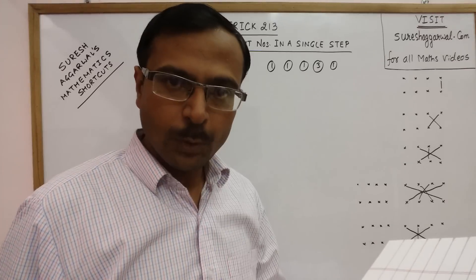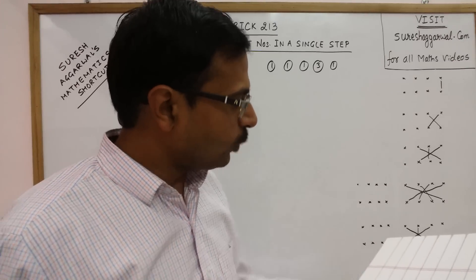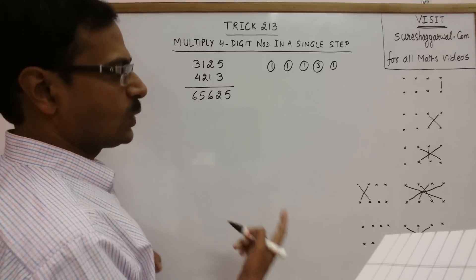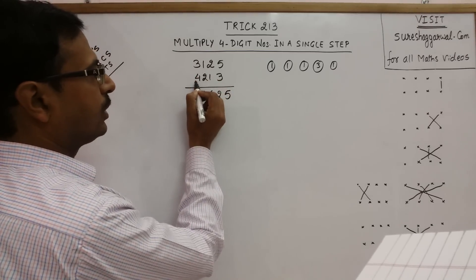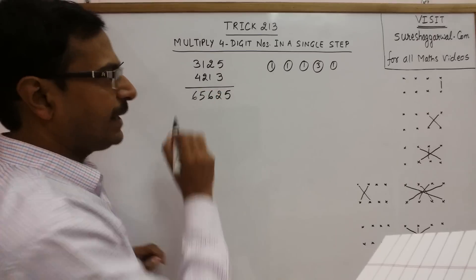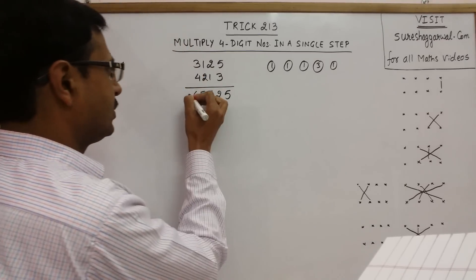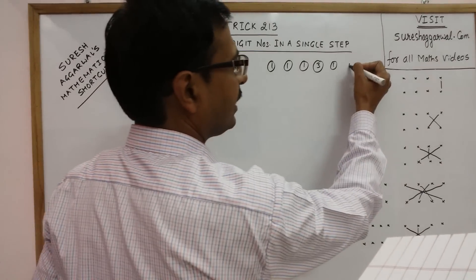Now leave behind 1 more pair, so we will be left with only 2 pairs. In the next step we will have only 2 pairs like this. 4 plus 6, 10 and 1 carry, so that is 11. 11 gives us 1 and again we have 1 carry.